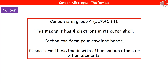Welcome to our review on carbon allotropes. The first thing we need to know is where we locate carbon on the periodic table. You'll find that it's in group 4, or if you're using the IUPAC groupings, then that's 14. So because it's in group 4, that means we've got 4 electrons in the outer shell.